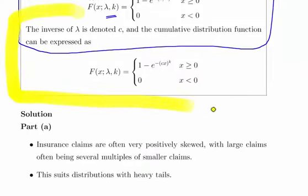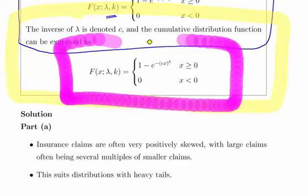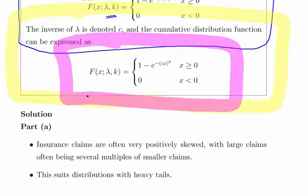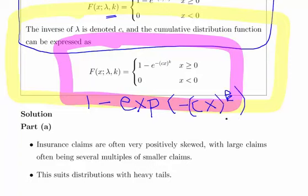The inverse of lambda is denoted C and therefore we can re-express the cumulative distribution function as follows. Using slightly different notation I'll just write it out: 1 minus exp of minus Cx to the power of K. So that is the cumulative distribution function.